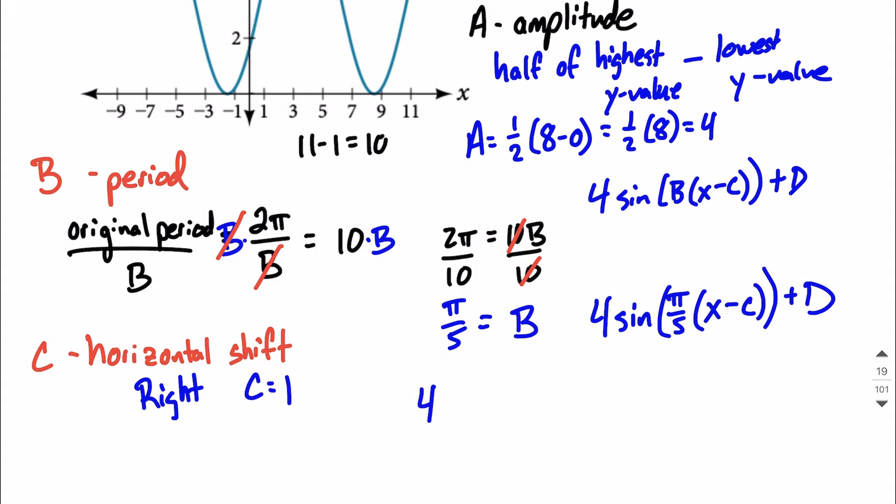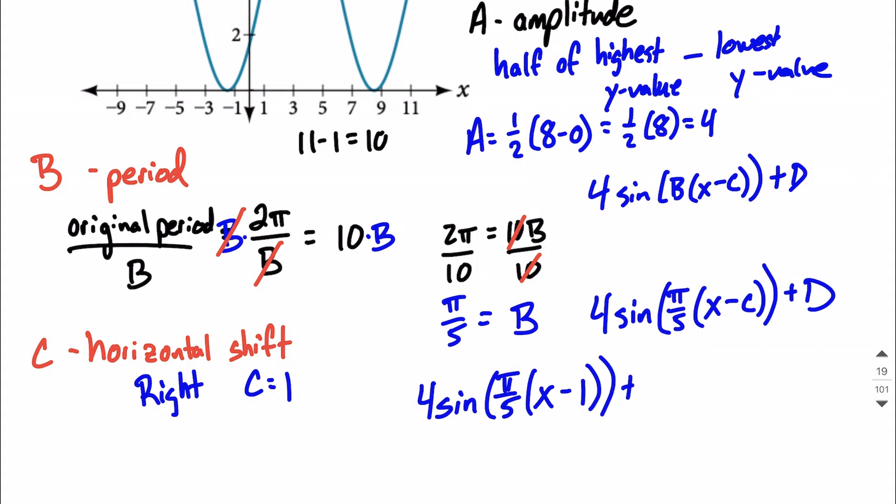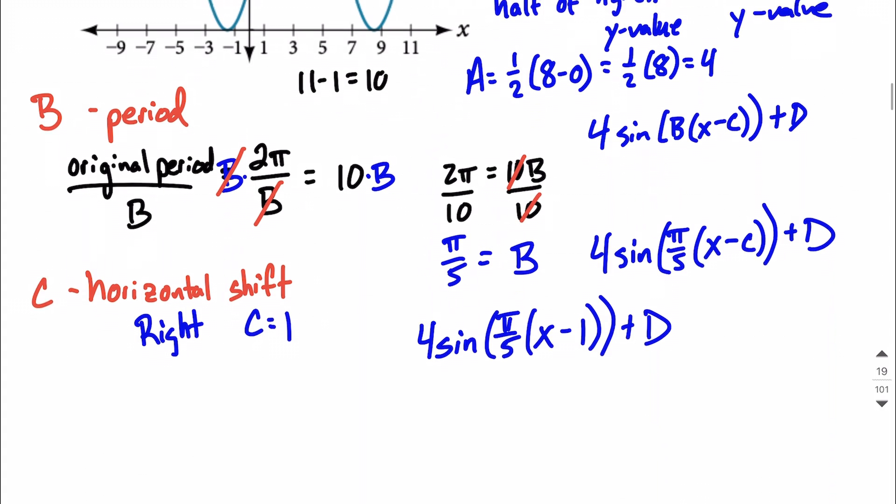And let's think about this as we put this together. We have 4 times sine of pi over 5, and then x minus 1, 1's replacing the C in this case, plus D at the end. Because we're subtracting a 1 directly from x, that's going to be a movement towards the right. If you wanted everything to be shifted to the left, which our graph doesn't, but if you needed that, you would be adding the value directly to x, where I put the 1.